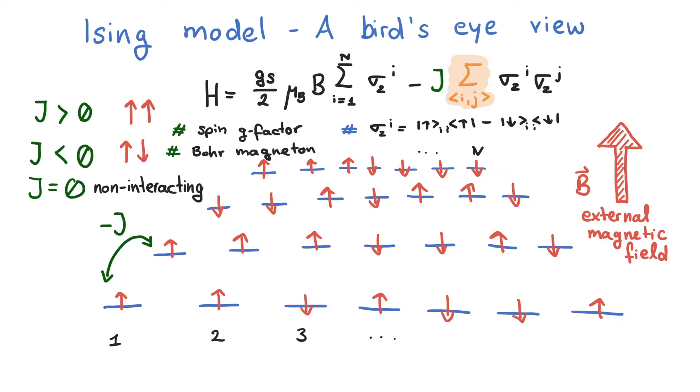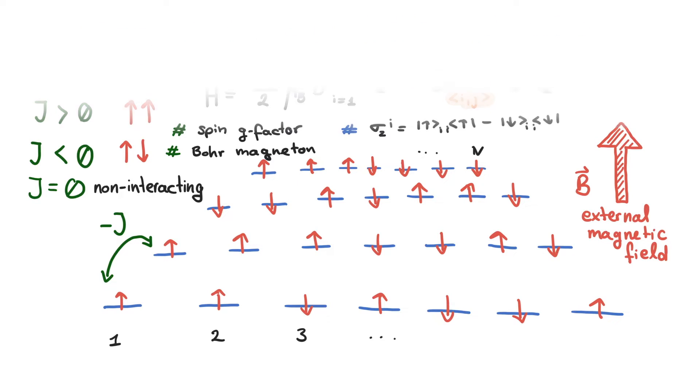It is now time to think of different geometries in which n sites may be arranged. In one dimension, it is a simple chain that could have free or periodic boundary conditions. The 1D Ising model is solvable with pen and paper. The solution shows that it has no phase transition.